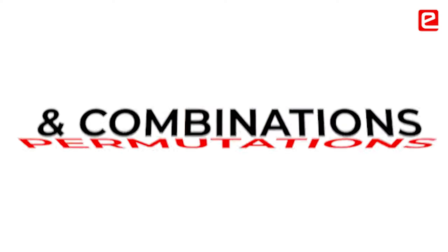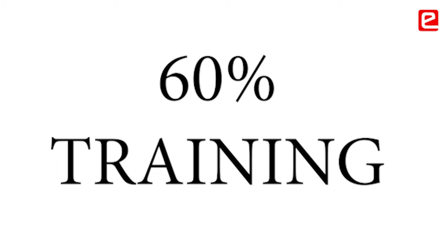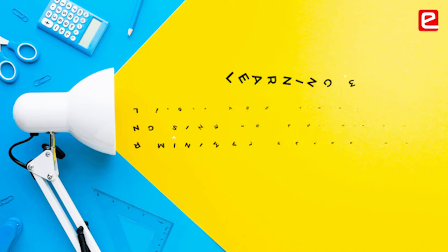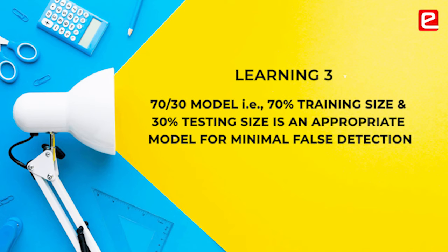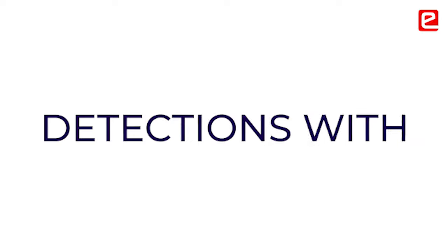We tried a number of permutation combinations: starting with 60% training and 40% testing, then gradually increasing to 70/30, 80/20, and 90/10. We found that the 70% training and 30% testing split was the most appropriate model to finalize. With this configuration, the false detections were minimal — we hardly found any false detections at all.